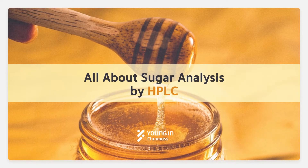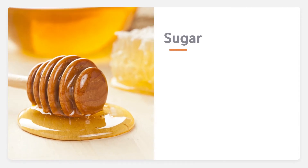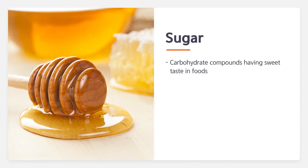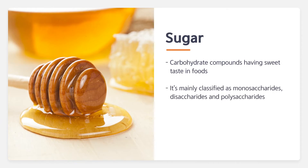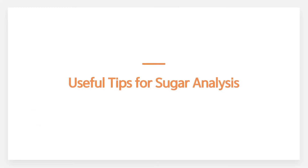All about sugar analysis: what is sugar? Sugars are carbohydrate compounds having sweet tastes in foods, and are mainly classified as monosaccharides, disaccharides, and polysaccharides. They are water-soluble and mostly present in various types of stereoisomers. We will help you understand sugar analysis more by giving these useful tips.